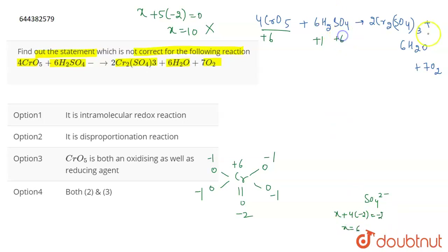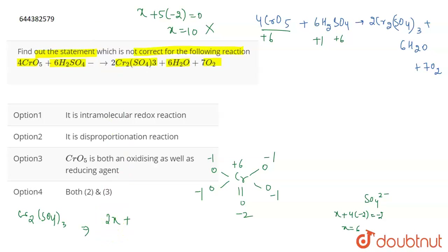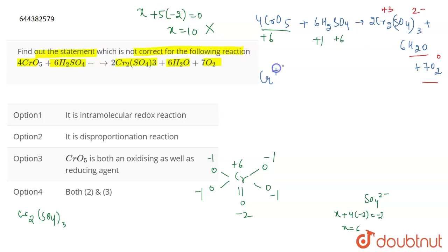In Cr2(SO4)3, SO4 has a 2− charge and Cr has a +3 charge — you can see this by cross-multiplying the valences to get the formula. In water, H is +1 and O is −2. In O2, the oxidation state is zero.